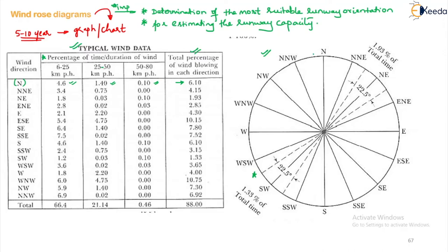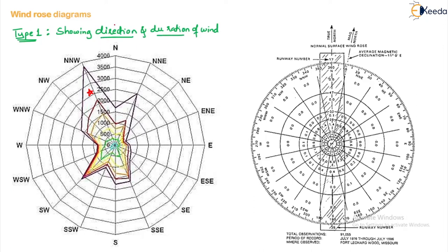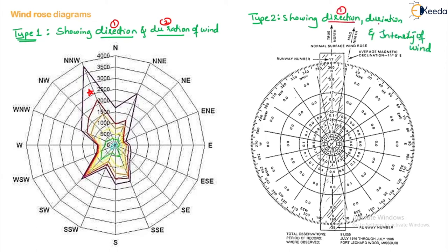Once you understand this, we can plot the wind rose diagrams in two ways. The first type — Type 1 — shows direction and duration of wind. The second type — Type 2 — shows direction, duration, and intensity of wind.